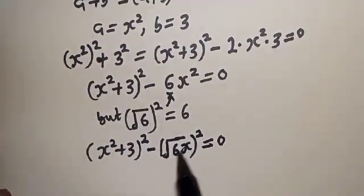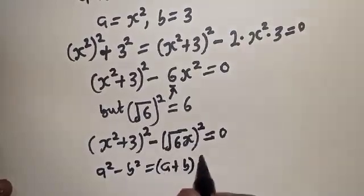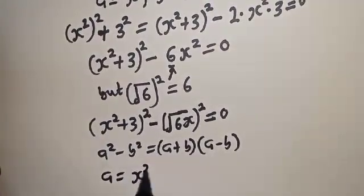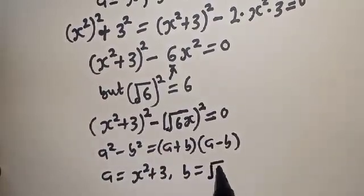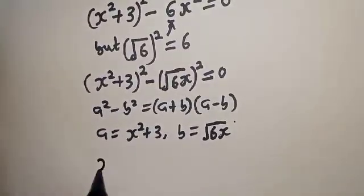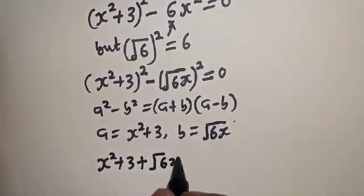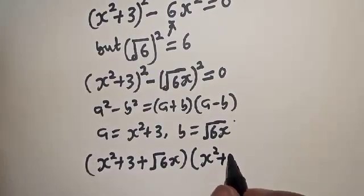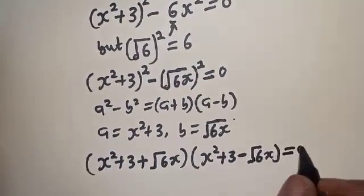Now if you look at this, this is a difference of squares. The rule is a squared minus b squared equals a plus b multiplied by a minus b, where a equals x squared plus 3 and b equals root 6 times x. Substituting, we get: x squared plus 3 plus root 6 x, multiplied by x squared plus 3 minus root 6 x, equals zero.